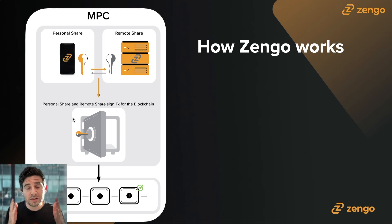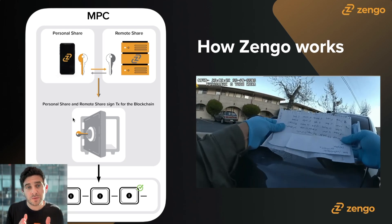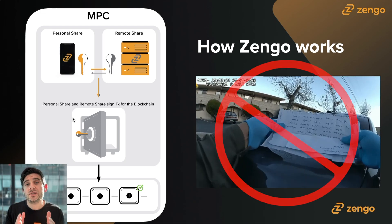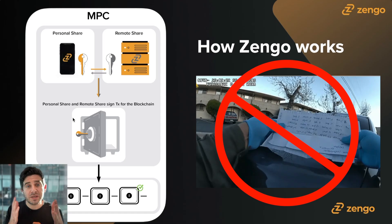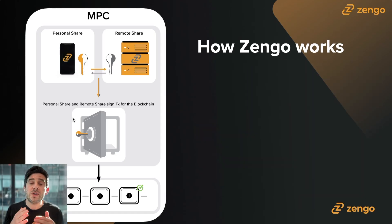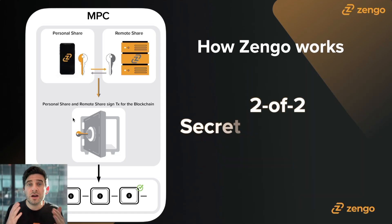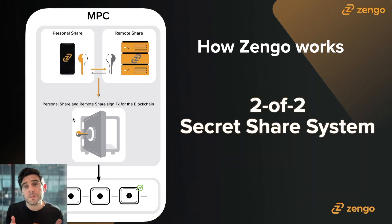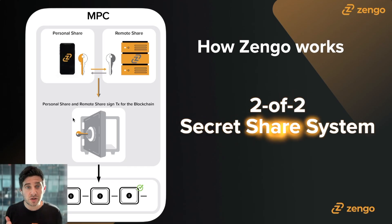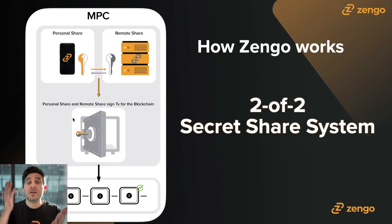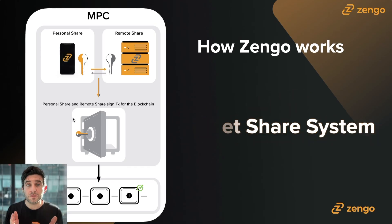In a traditional wallet, you have a single point of failure. Zango does not have that. In our MPC model, we use a two of two system with two secret shares: the personal share and the remote share.